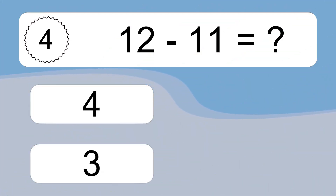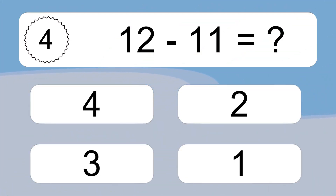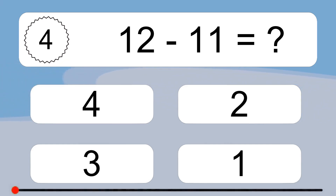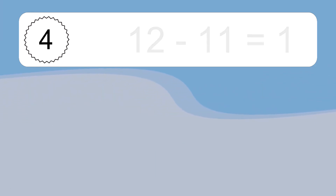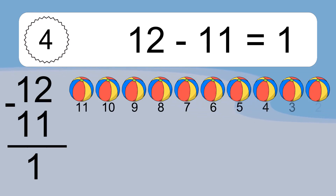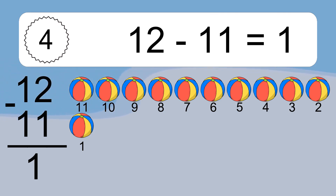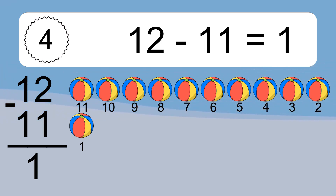12 minus 11 equals what? 12 minus 11 equals 1. Let's count it: 11, 10, 9, 8, 7, 6, 5, 4, 3, 2, 1.